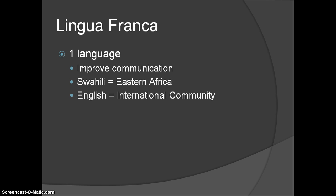Today, English is really the global lingua franca — the language of the international community. English is the lingua franca of education, economics, and diplomacy. About 80-some percent of all information found on the internet is in English, meaning that someone living in a country where English isn't spoken, even with internet access, would lose access to a large portion of that information if they couldn't read English.